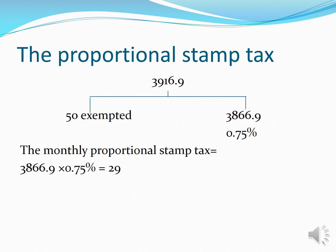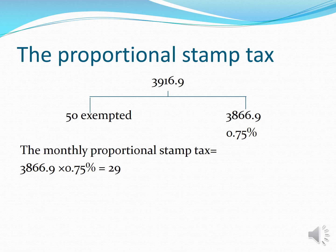The tax bracket equals 2,960.9. We deduct the first slice of 50 exempted from the tax bracket, leaving 2,910.9 — wait, the amount after deducting the exempted equals 3,863.9. This amount lies between 1,000 and 5,000 with a rate of 0.75%. Therefore, 3,863.9 multiplied by 0.75% equals 29.